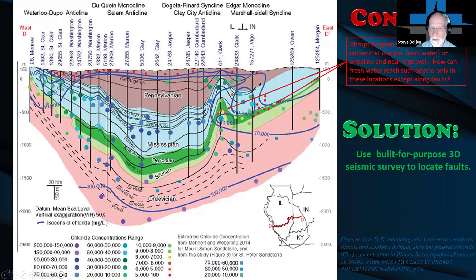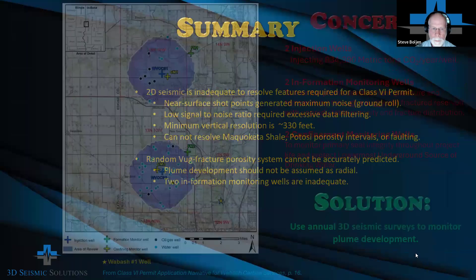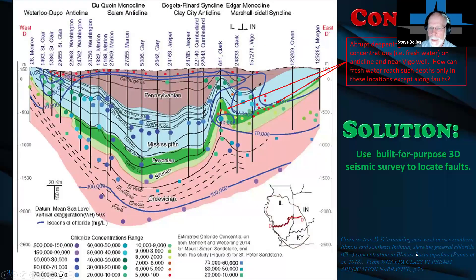Our solution to that is we can address this by building that built-for-purpose 3D seismic survey Dan was talking about, and we can see the fault potential in both of these areas. Previous surveys of this type using these dense arrays run 24/7 and, as Dan pointed out, not only can we identify the faulting, we can also pick up the micro-seismic events and we can find out if these faults are active and currently moving.